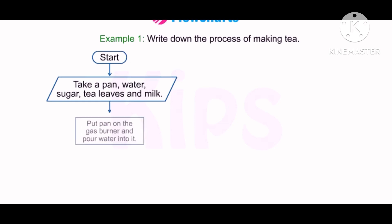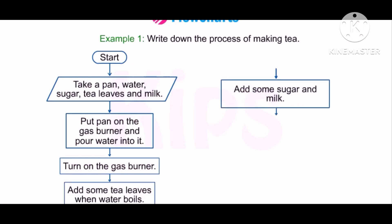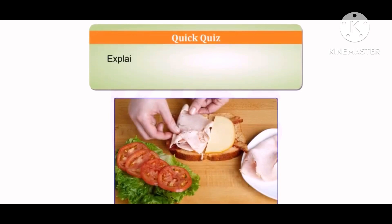Write down the process of making tea. Start. Take a pan, water, sugar, tea leaves and milk. Put a pan on the gas burner and pour water into it. Turn on the gas burner. Add some tea leaves when water boils. Add some sugar and milk. After processing, take off the pan. Strain it in a cup and serve the hot tea. Stop. Students can explain the process of preparing a vegetable sandwich.